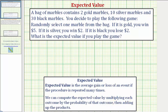Looking back at the given information, notice how the bag contains two gold marbles, 10 silver marbles, and 30 black marbles. So the total number of marbles would be 2 + 10 + 30, which equals 42. Let's write this down because we need this to find the probability of each outcome.